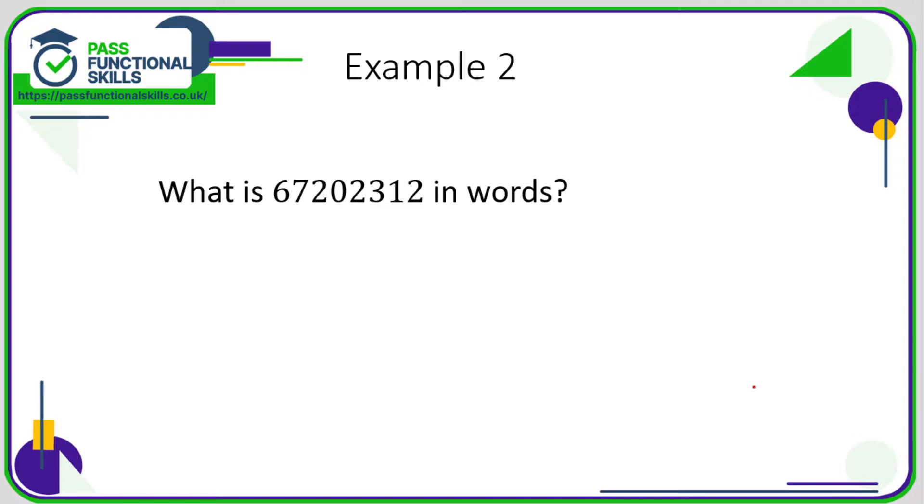So my recommendation is, going from right to left, put a comma after every group of three: 1, 2, 3, comma, 1, 2, 3, comma. Now, this comma here we are going to say the word 'thousand', this comma here we are going to say 'million'.